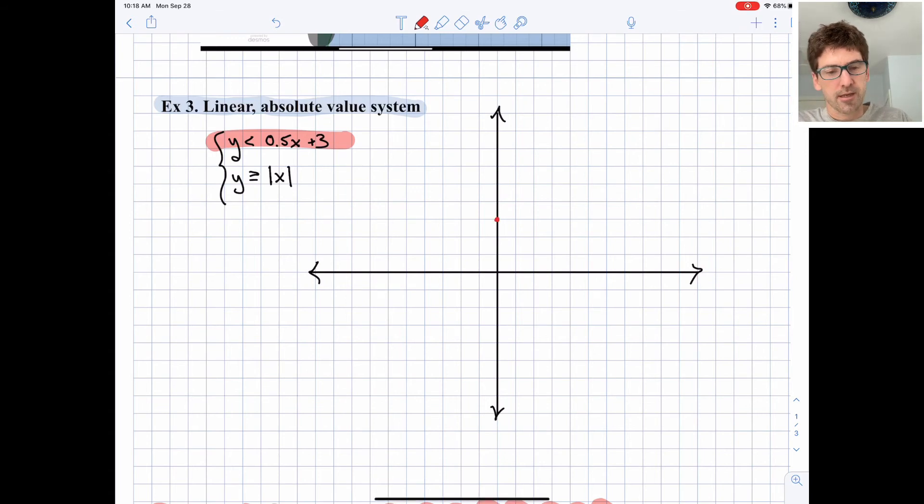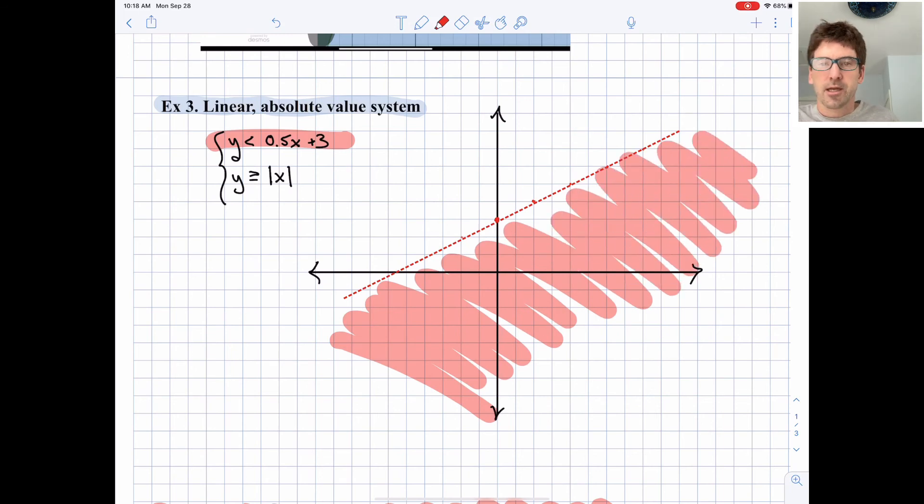We'll start by going to our y-intercept of 3 and then applying our slope of 0.5. So up 1 over 2, up 1 over 2, up 1 over 2. 1 over 2 is a half, that's equal to 0.5. We can graph this line here, roughly. Let's try to get it a little more precise. There we go. There's our boundary line. Since y is less than 0.5x + 3, I'm going to shade the area below the line that includes the origin, because x, y = 0 both result in valid solutions to this inequality.